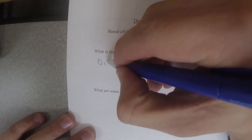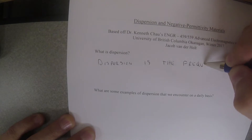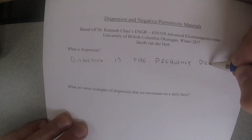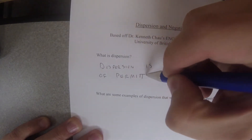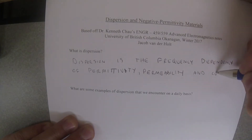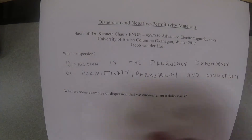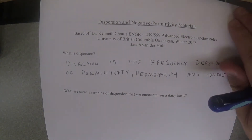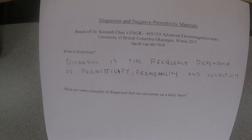What is dispersion? Dispersion is the frequency dependency of permittivity, permeability, and conductivity. We know that real materials have these permittivity, permeabilities, and conductivities that vary with frequency. In the past, we've assumed that all these things are just constant with frequency, but now we're looking into how permittivity, in this case, changes with frequency.